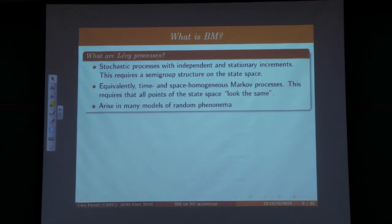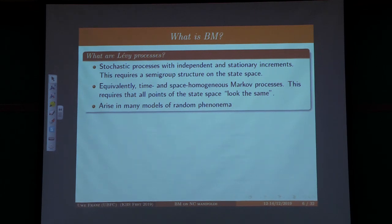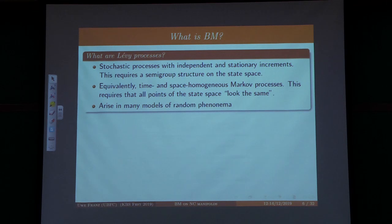For a classical probabilist, Brownian motion can be viewed as a special case of Levy processes, or otherwise Levy processes can be seen as a common generalization of Poisson processes and Brownian motion. To define a Levy process, you typically need a multiplication on the state space, and then you want something that has stationary and independent increments, where increments are defined by multiplying random variables in your state space. Those are also exactly the Markov processes which are homogeneous in time and space — all points should look the same and the process should behave the same from each point and at all times.